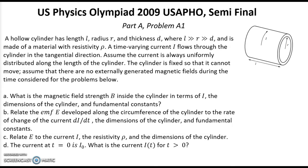Hi to all! Today we will discuss six problems from US Physics Olympiad 2009, USAPHO, from the last round semifinal. It consisted of part A which had four problems and part B with two problems. For part A there were given 90 minutes and for part B there were 90 minutes too.